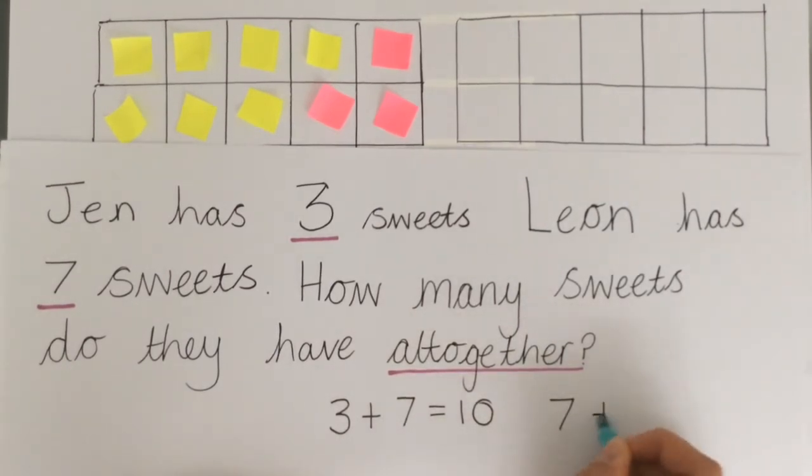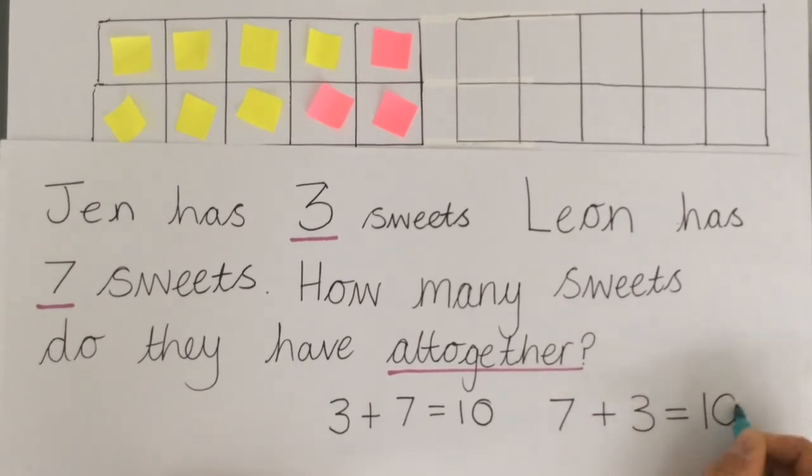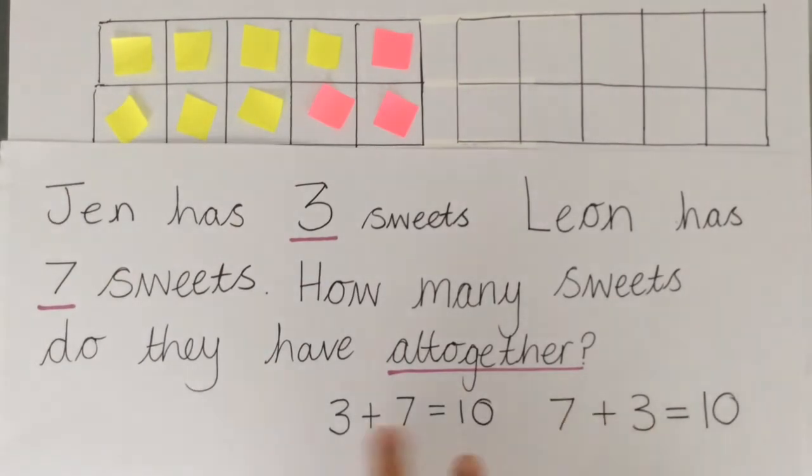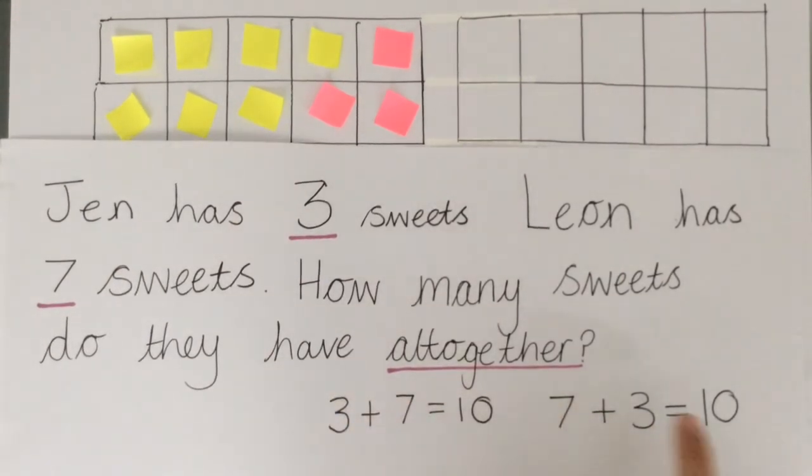So we can switch that round as well to seven, add three, equals ten. Well done if you already got that right. Do you want to have a go at another one?